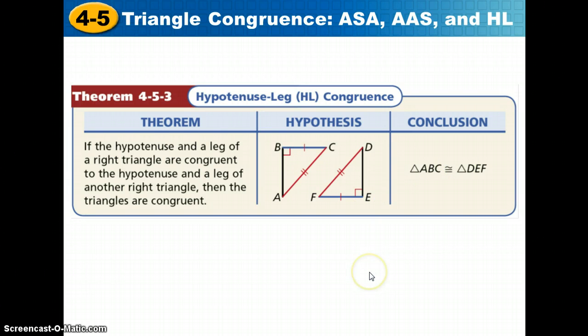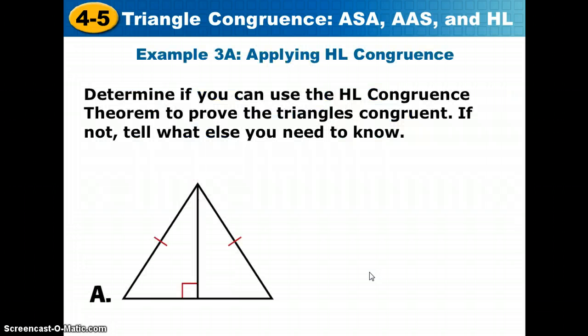But you must have given or be able to establish the fact that they are right triangles. So we're going to see if we have enough information here to conclude that these triangles are right triangles using hypotenuse leg. If they are congruent right triangles, that is. Determine if you can use HL congruence to prove the triangles are congruent. If not, tell what else you would need to know.